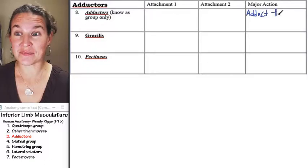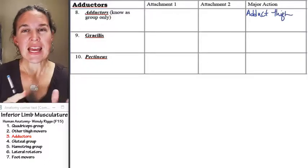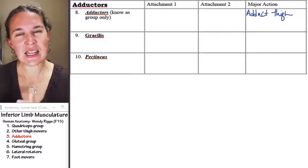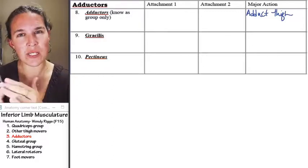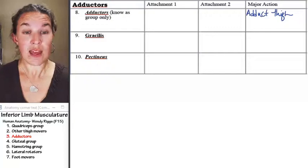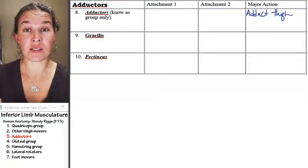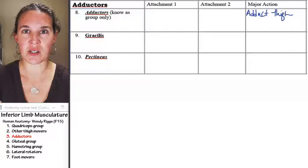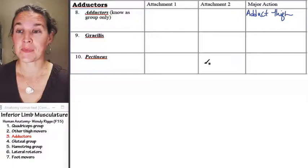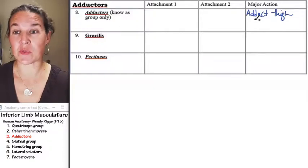Adducting what? The thigh. If they're adducting the thigh, where are they going to attach? They have to have one attachment on the pelvis, and then they have to have another attachment on the femur. So we'll look at where those attachments are.